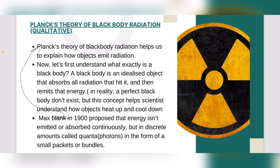So black body is something which absorbs all radiation and re-emits that energy. Then in 1900, Max Planck said something very revolutionary. He proposed that energy is not something which is emitted or absorbed continuously — energy comes in discrete amounts. These discrete amounts are called quanta or photons, like sunlight coming in the form of small packets or bundles.